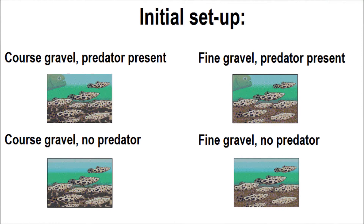So, here's the set-up. Guppies were assigned randomly to ten ponds — five with coarse gravel and five with fine gravel. All ten colonies of guppies were allowed to breed freely for six months with no predators. At this point, the experiment proper began. Endler put one dangerous predator into each of two coarse gravel ponds and two fine gravel ponds. He put six weak predators — six rather than one, to give a closer approximation to the relative densities of the two kinds of fish in the wild — into each of two coarse gravel ponds and two fine gravel ponds. And the remaining two ponds just carried on as before, with no predators at all.